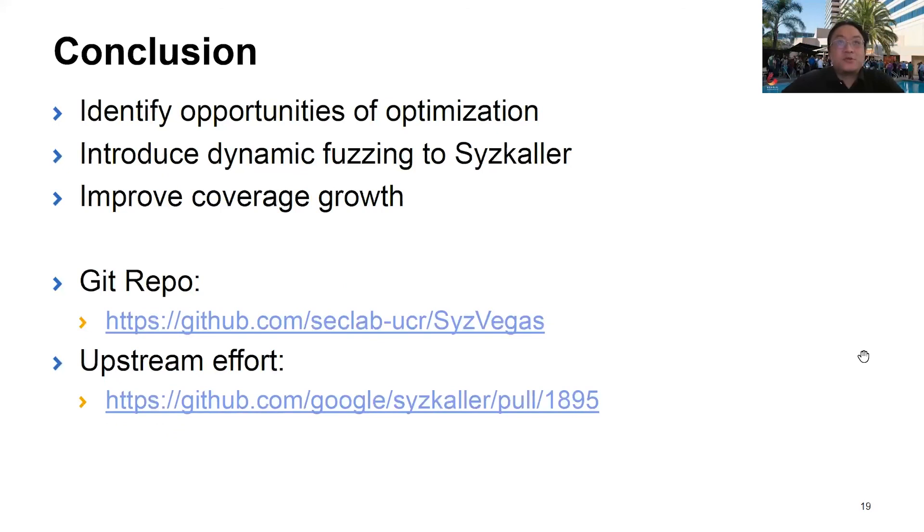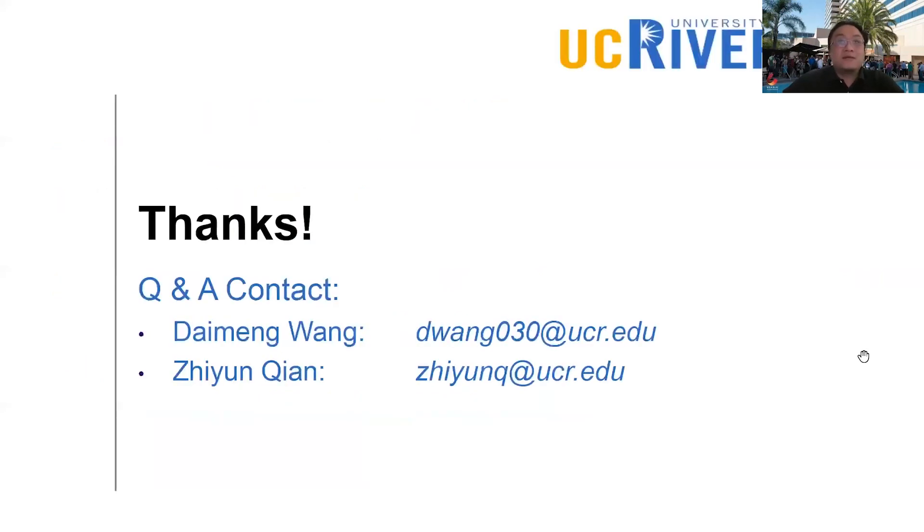In conclusion, we identify opportunities to optimize Syzkaller. We propose SysVegas using reinforcement learning to dynamically improve the odds of finding new coverage. We open source our code used in the paper and are making progress to upstream our work to Syzkaller. That concludes my presentation. If you have any questions, feel free to contact either me or my professor. Thank you very much for watching. Enjoy the conference.